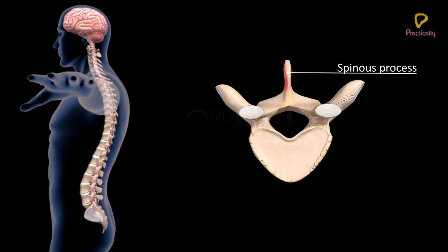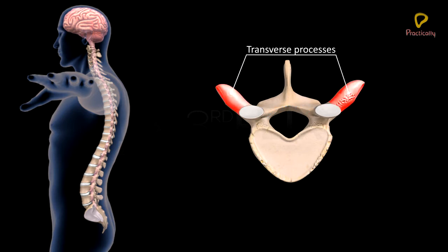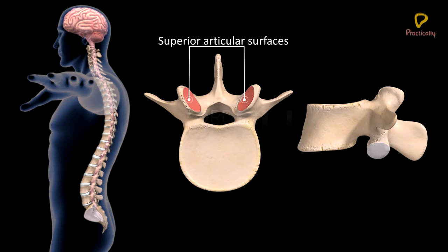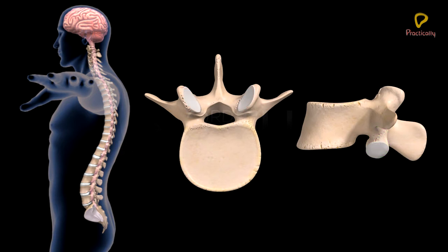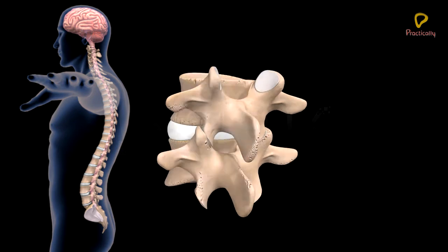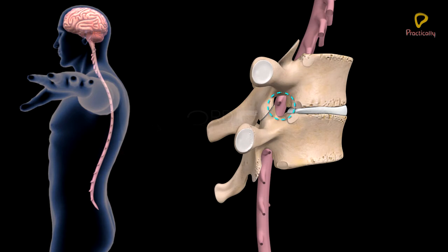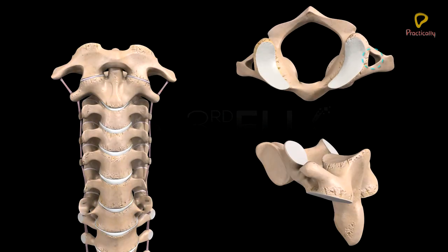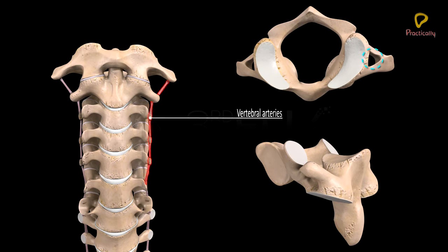A neural spine or spinous process is present on the dorsal surface of the neural arch. Transverse processes are present, one on each side of the vertebra. There are two superior articular surfaces or pre-zygapophyses and two inferior articular surfaces or post-zygapophyses on each vertebra. The post-zygapophyses and pre-zygapophyses of successive vertebrae articulate by gliding joints. Intervertebral foramina are present between successive vertebrae through which the spinal nerves emerge. Vertebral arterial canals are present for the passage of the vertebral arteries.